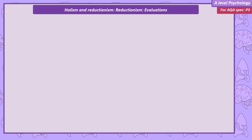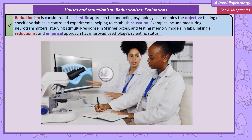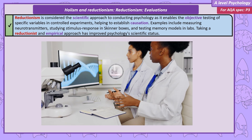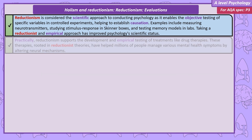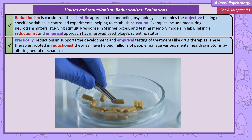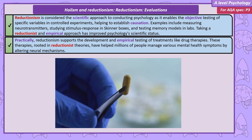Evaluations. Taking a reductionist approach allows psychologists to identify individual variables that can be tested objectively under experimental conditions, ultimately allowing the researcher to establish a cause-and-effect relationship. Using the previous examples, neurotransmitter levels can be measured precisely, stimulus-response mechanisms can be investigated with Skinner boxes, and the components of models of memory can be tested under controlled laboratory conditions. As this empirical method is a principle of science, taking a reductionist approach has helped psychology become more respected as a science. There have also been practical applications — taking a reductionist approach allows for the development and empirical testing of treatments like drug therapies. Drug therapies are based on reductionist theories, and altering neural mechanisms has led to effective treatments that have helped millions control the symptoms of a range of mental health issues.